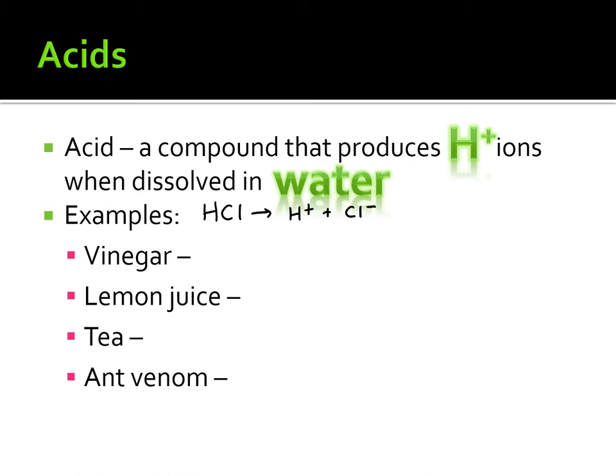What we are most concerned with are those hydrogen ions. Our definition for acids: compounds that produce hydrogen ions when dissolved in water. I would also write this formula to help you remember. H+ is another good way to identify acids — they typically start with the letter H when you look at their chemical formulas.